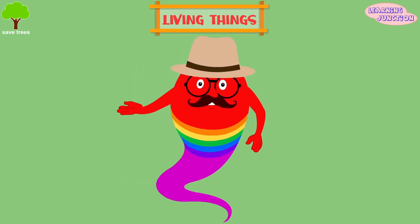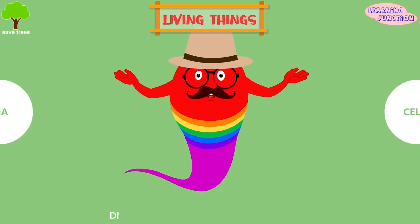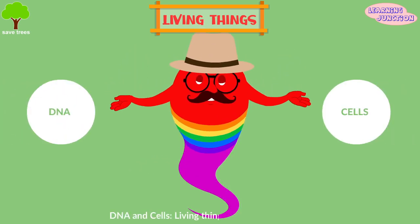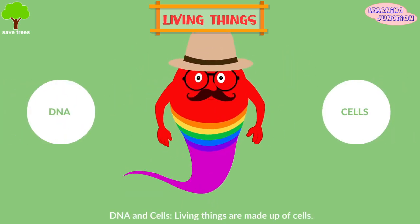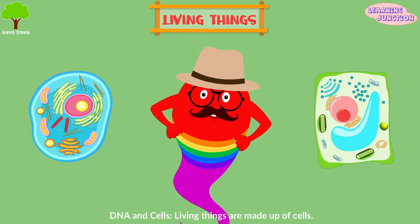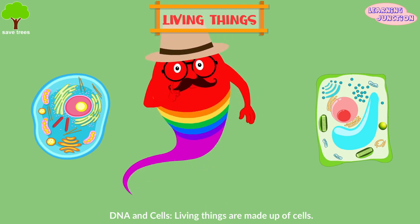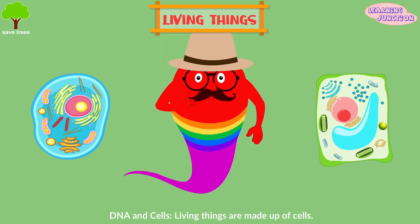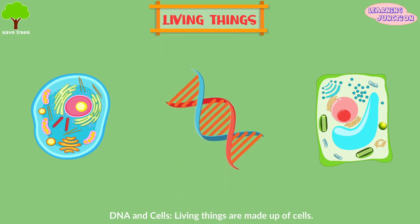The main characteristics of living things are DNA and cells. Living things are made up of cells. A cell is the basic building block of all the organisms. It is the smallest unit of organization and contains the organism's DNA.